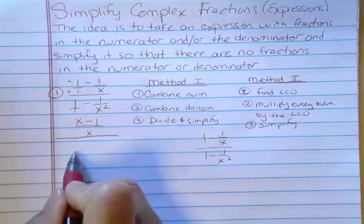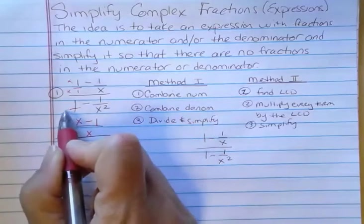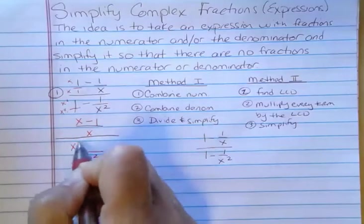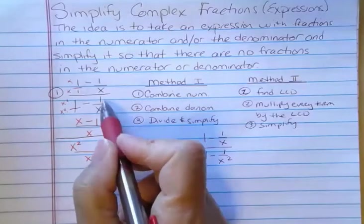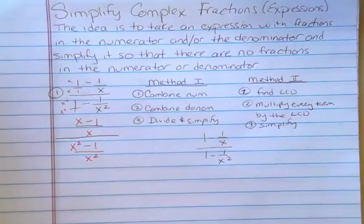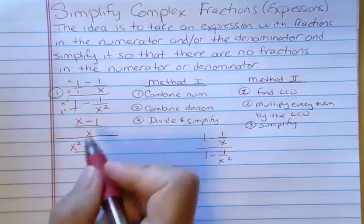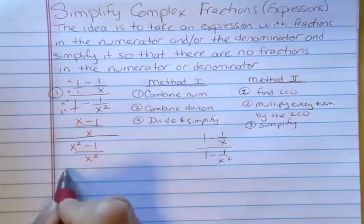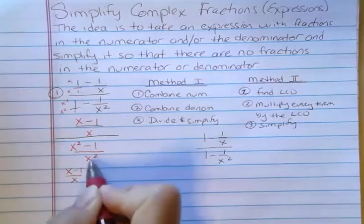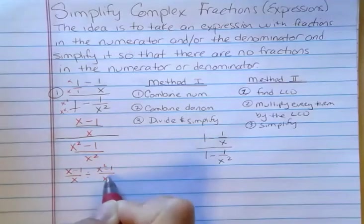I'm going to have x squared down here. The first term — I've got to multiply by x squared on top and bottom. Down here, I don't have to multiply by anything because it already had the x squared, so I have minus 1. Now I've combined the numerators and I've combined the denominators. Now I'm going to divide, because what this says is x minus 1 over x, divided by x squared minus 1 over x squared.